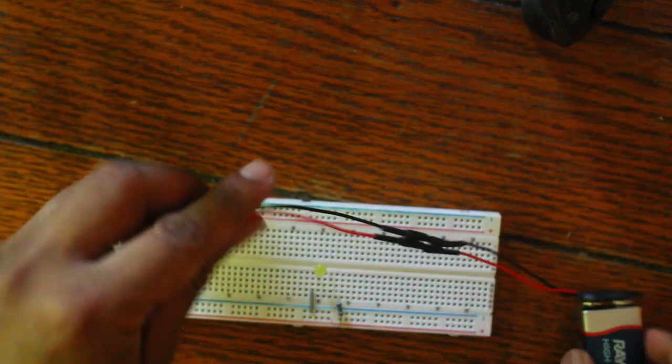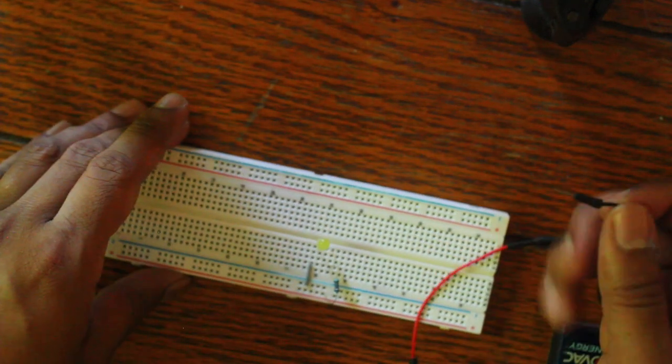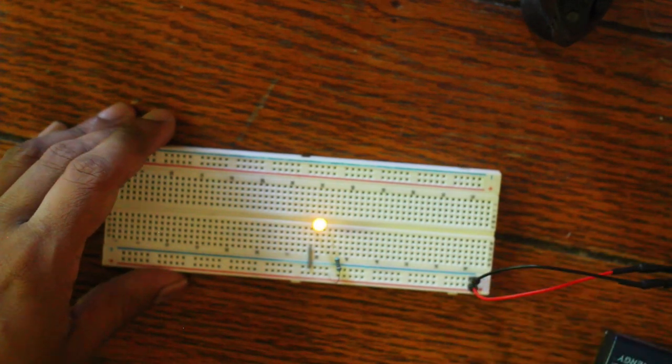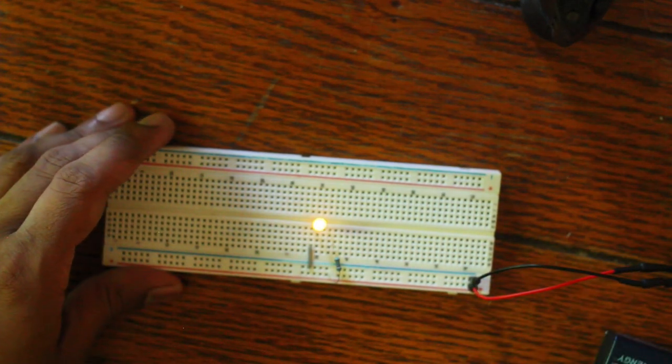Have my little battery here. Have the negative plug into the negative rail, the positive turn into the positive rail, and then BAM, there you go.